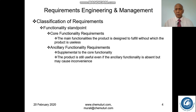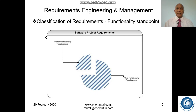From the functionality standpoint we have two types of requirements: core functionality requirements and ancillary functionality requirements. Core functionality requirements are what the product is designed to fulfill — without fulfilling this, the product becomes useless. Ancillary functionality is the support functionality; the product is still usable even if ancillary functionality is completely absent, but it may cause inconvenience or lead to errors.